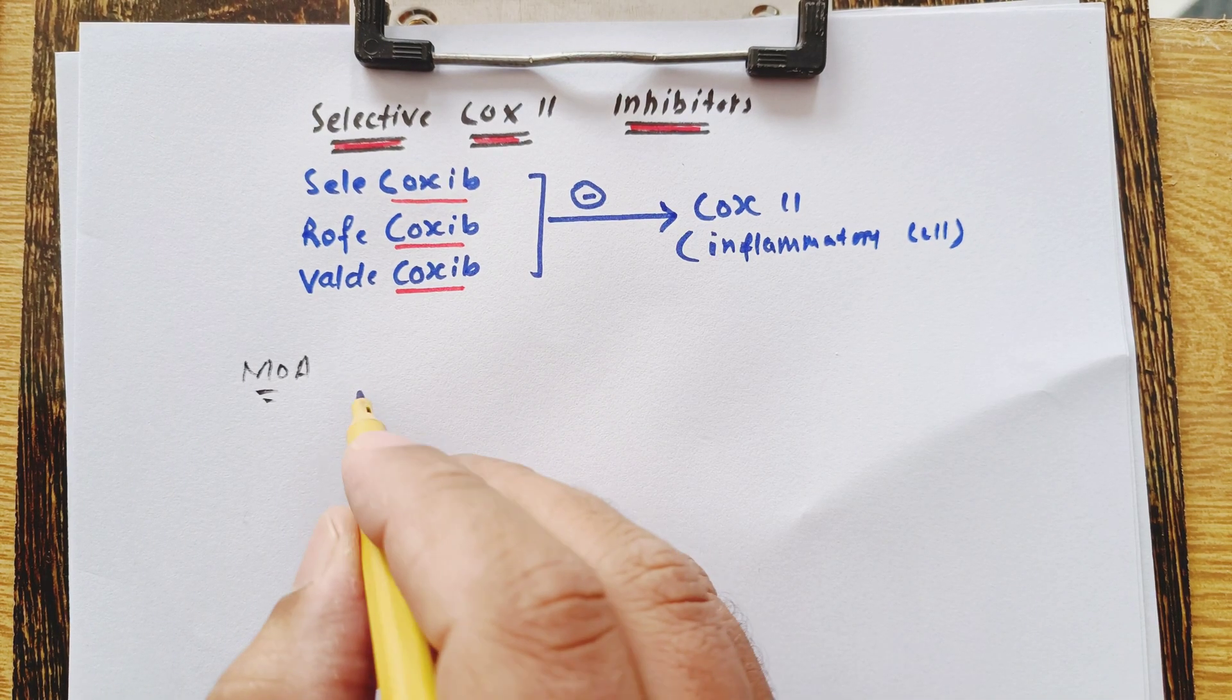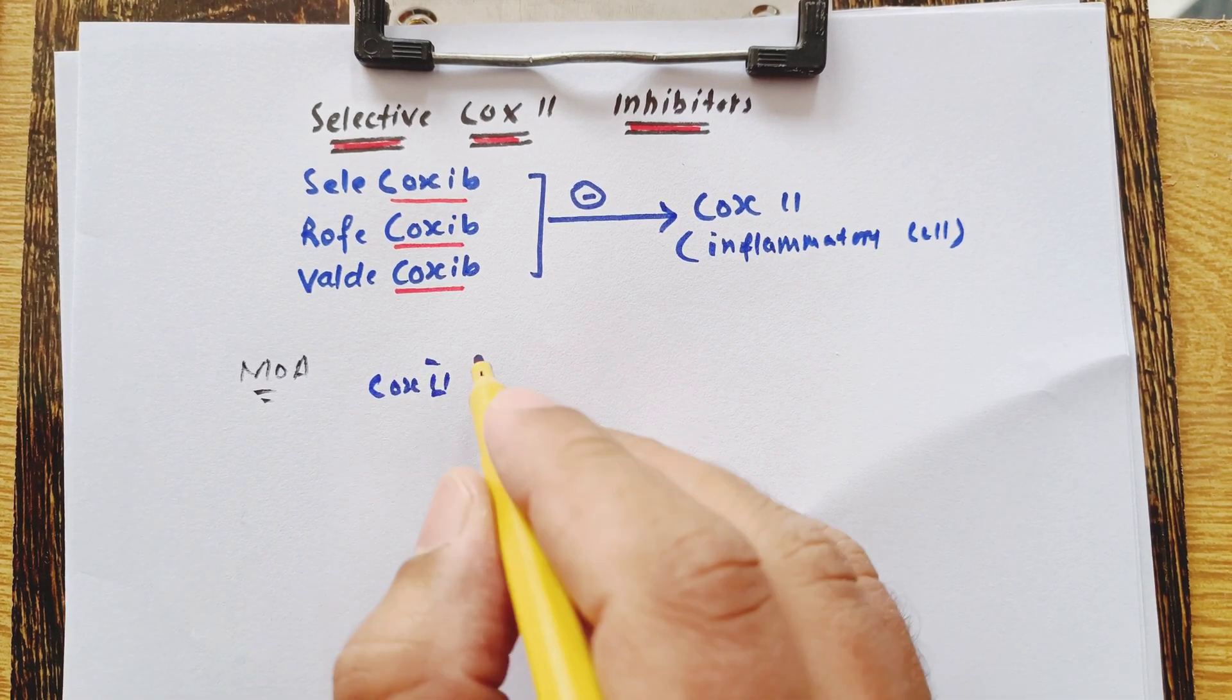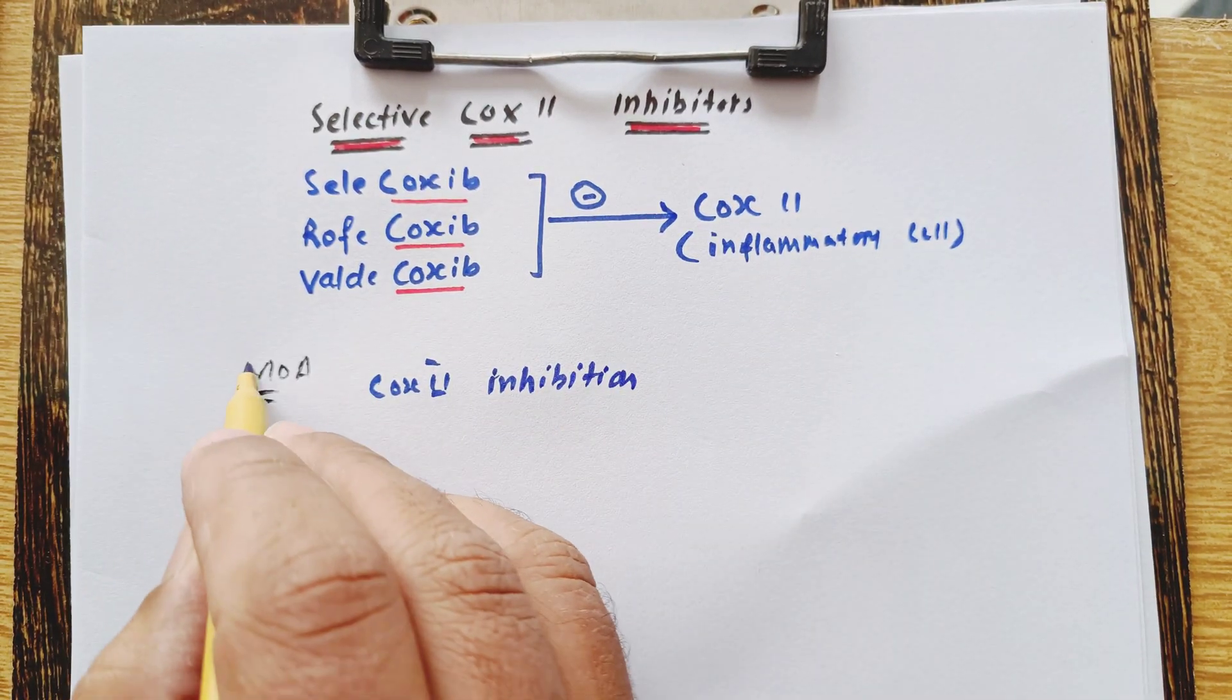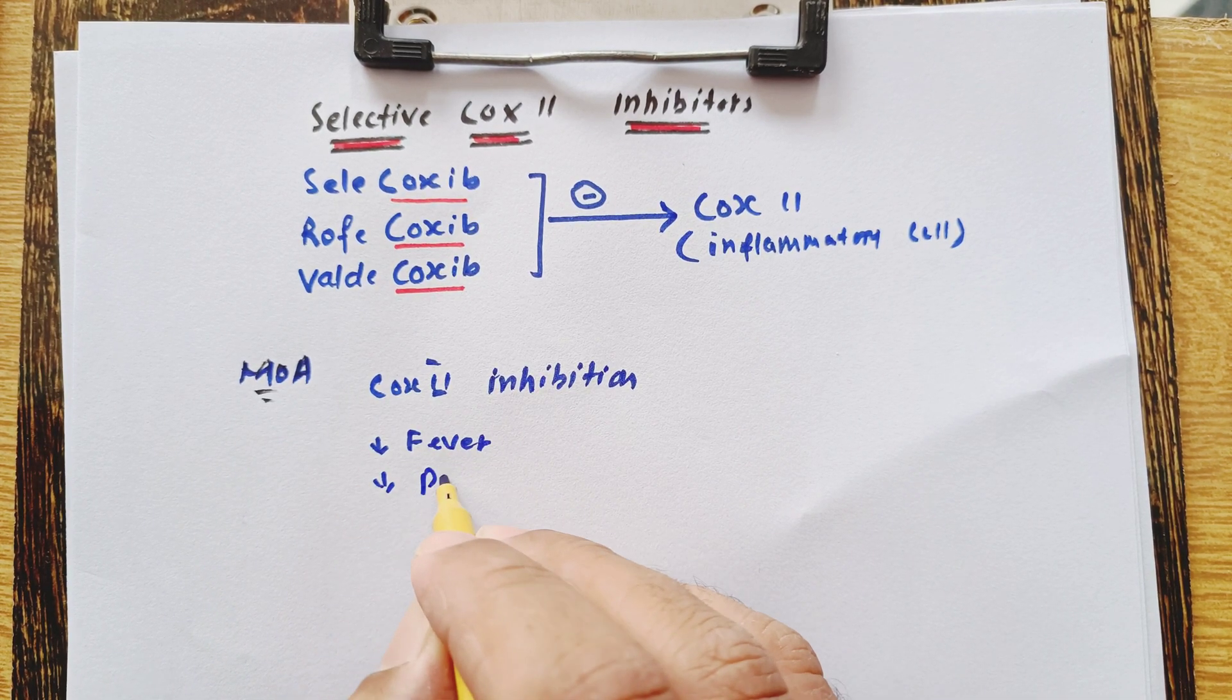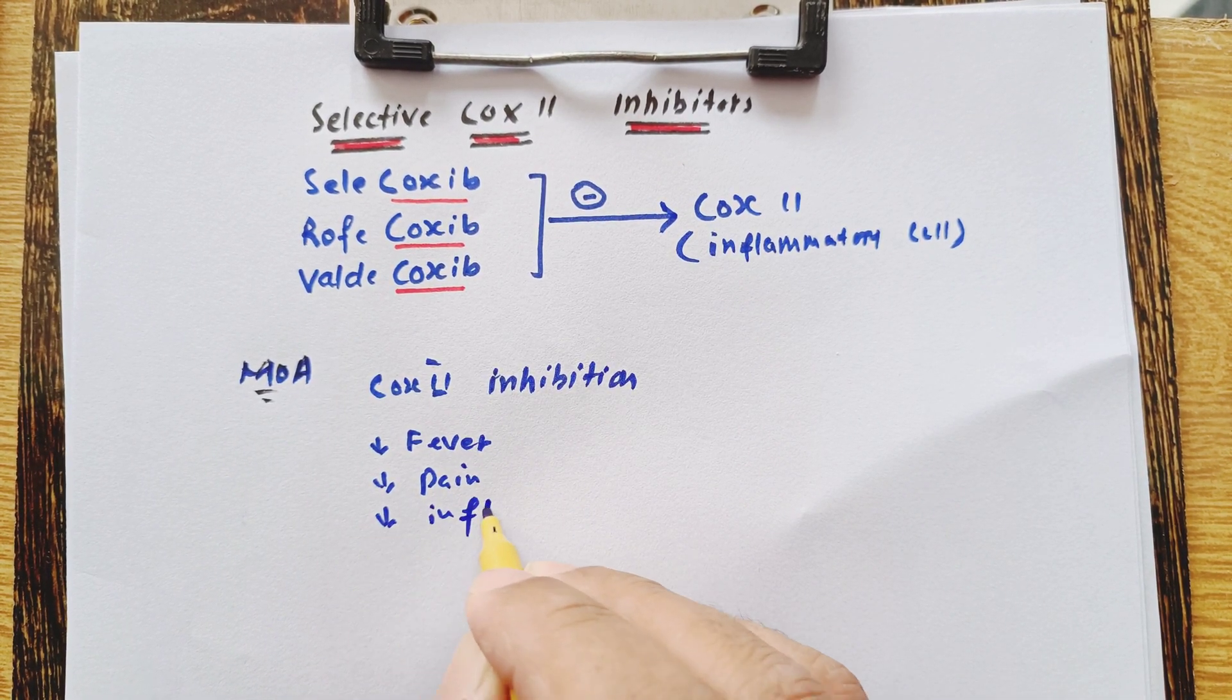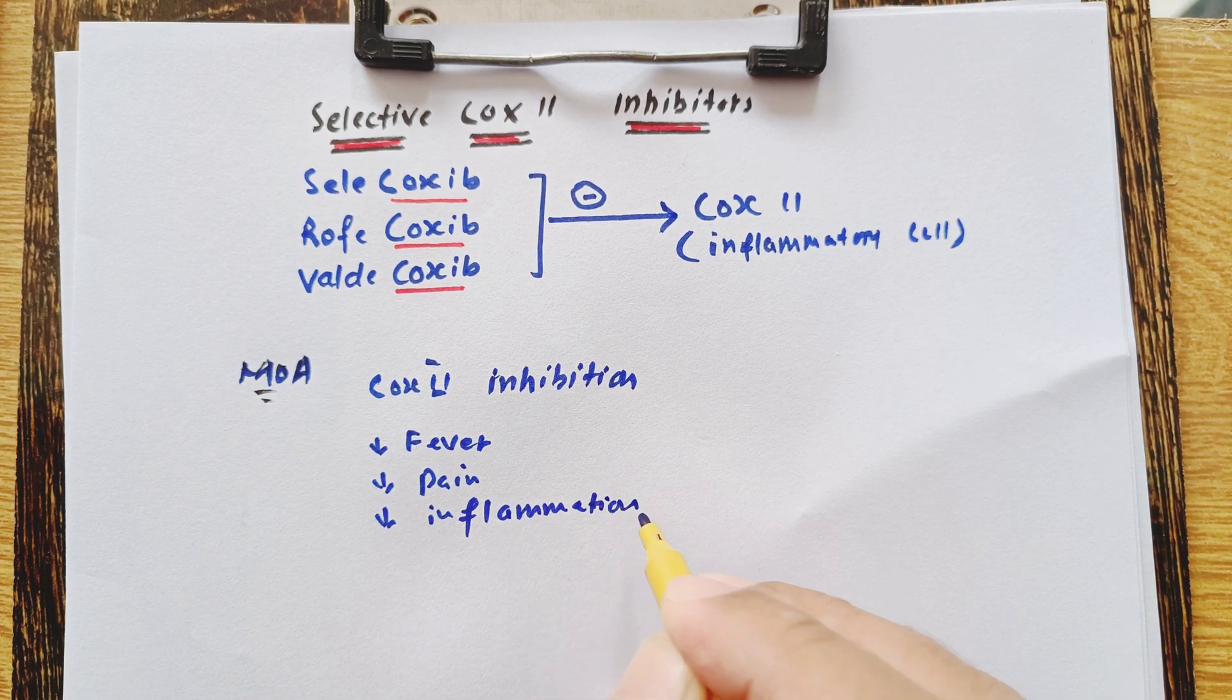Now mode of action. These drugs are going to inhibit the COX-2 enzyme which is present in inflammatory cells. So they are going to decrease fever, so antipyretic, decrease the pain analgesic, and decrease the inflammation anti-inflammatory activity.